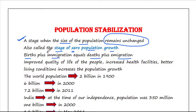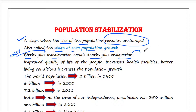Immigration means some people which are entering from outside, and emigration means some people which are leaving the habitat.